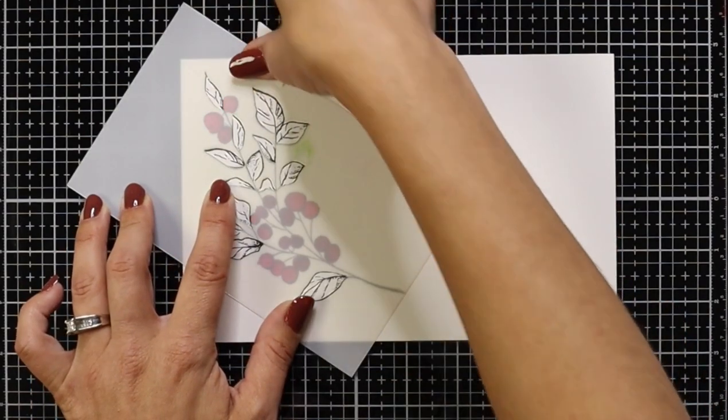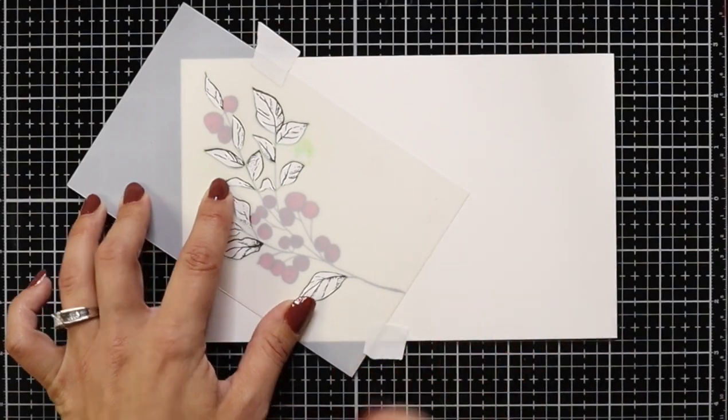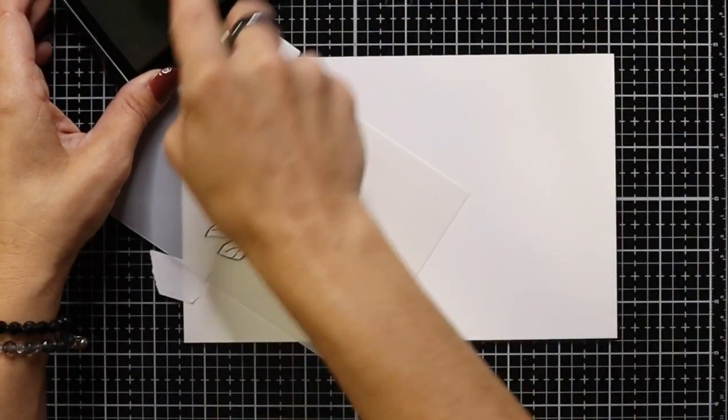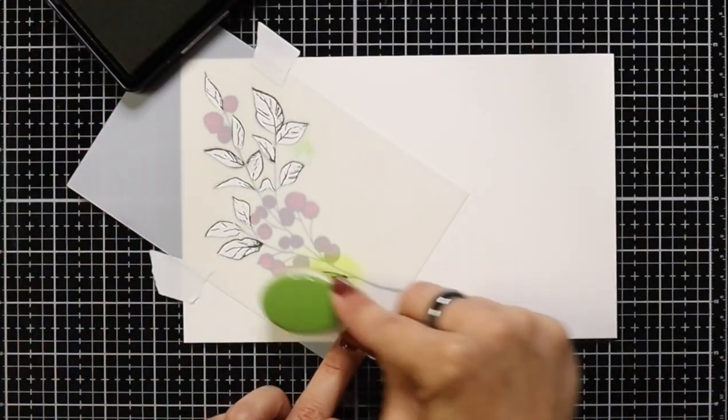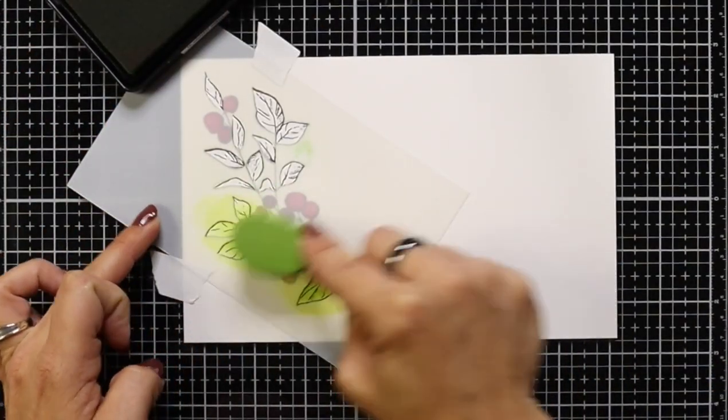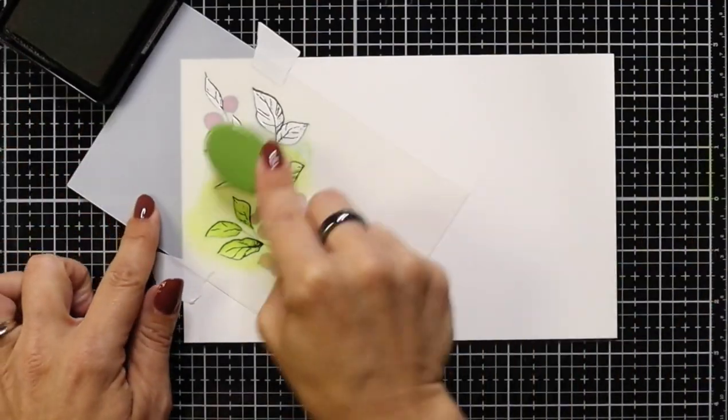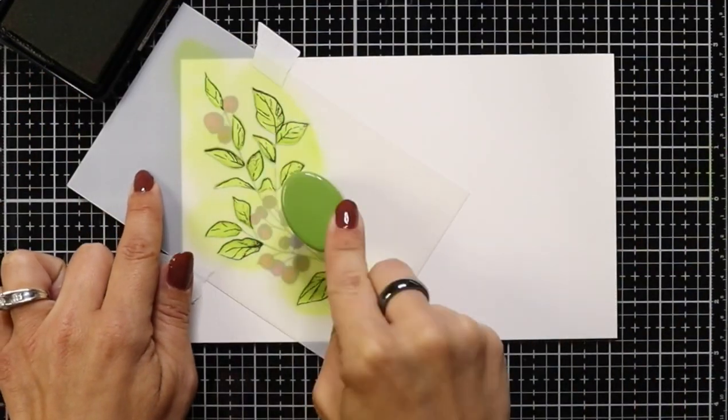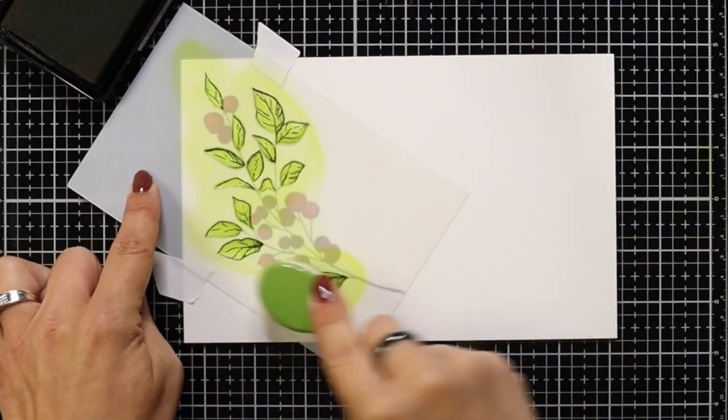Then I'm going to take the leaves portion and same thing, just kind of holding that down with the post-it tape. I'm going to start with Granny Smith ink, giving that just a really nice light layer. And if you wanted, you could mask off the edges of your stencil too, so you didn't have any over blending getting on your cardstock.